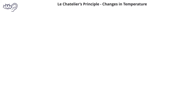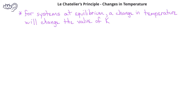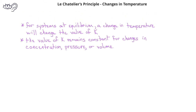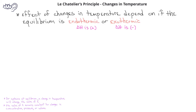When we look at changes in temperature and how they affect an equilibrium system, one key difference from other changes is that a change in temperature will change the equilibrium constant for the system. When we change concentrations of reactants or products, or when we change the volume or pressure of a system at equilibrium, there is no change to the equilibrium constant. When we change the temperature of a system at equilibrium, the effect depends on whether the reaction is endothermic or exothermic.